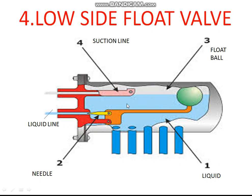How is the float valve working? When the liquid level is low, the float valve drops down and the needle valve opens, allowing refrigerant liquid to flow in. The liquid level in the evaporator is maintained by the low side float valve.